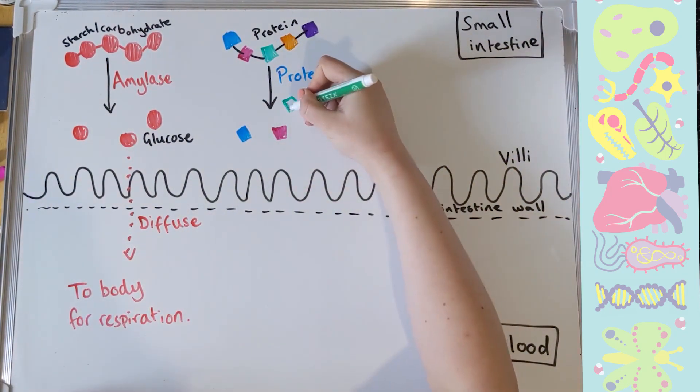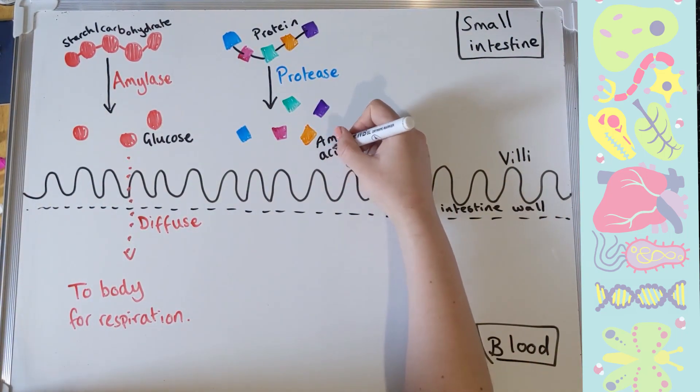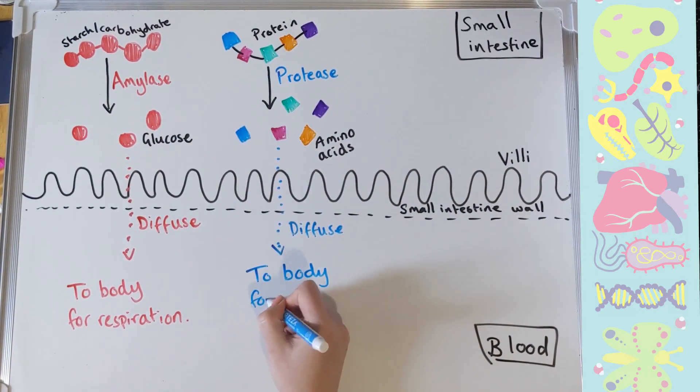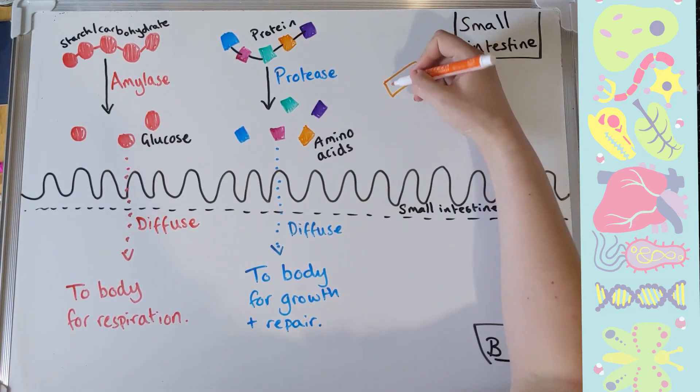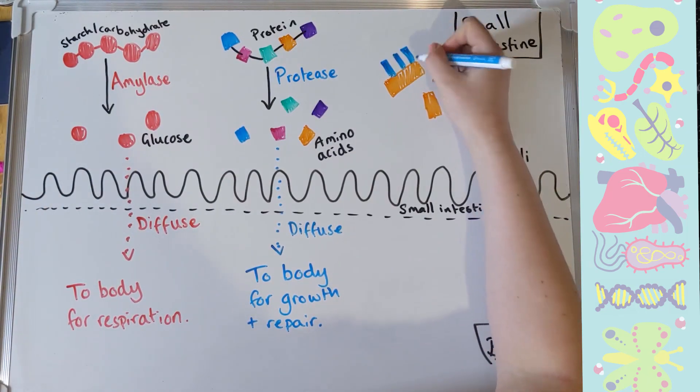Protein is made up of lots of different units. This gets broken down by protease, another enzyme. This breaks it into amino acids. Those amino acids then diffuse across the intestinal wall, through the villi, into those blood capillaries, and then that is taken off to the body and used for growth and repair.